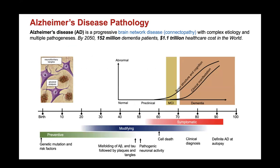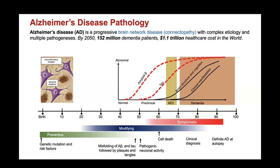I want to give a little background about brain disease. Alzheimer's disease is a progressive brain network disease with very complex etiology and multiple pathogeneses. By 2050, there will be 152 million dementia patients and 1.1 trillion dollars in healthcare costs in the world. You can see that actually, before the onset of AD, almost two decades earlier, people already begin developing Alzheimer's disease — starting from 40 years old, they are detected as Alzheimer's disease patients when they are 70 years old.